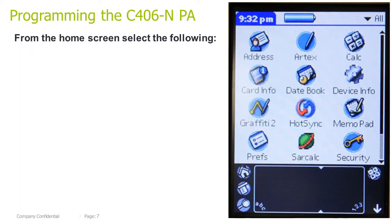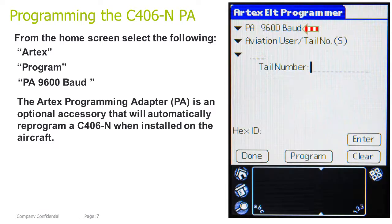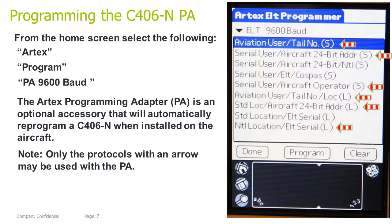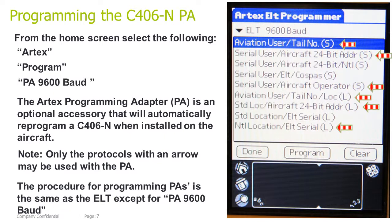Programming the C46-N programming adapter, or PA. From the home screen, select the following: Artex, Program, PA 9600 Baud. The Artex programming adapter, or PA, is an optional accessory that will automatically reprogram a C46-N when installed on the aircraft. Note: only the protocols with an arrow may be used with the PA. The procedure for programming PAs is the same as the ELT, except select PA 9600 Baud.